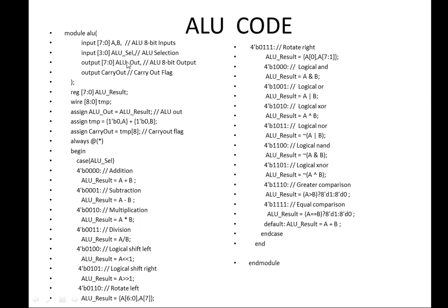Next, decide how many operations you want to perform. I'm taking 4 select lines, from 0 to 3, so it can perform 16 operations. The output after performing an operation is stored in the output port, and if any carry out occurs, you will get a 1. Those are the two outputs.